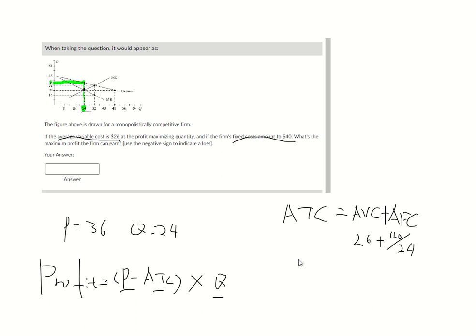So your average total cost in this question is 40 divided by 24 plus 26. Let me calculate that using my calculator. 40 divided by 24 plus 26, and that's going to be 27.6667. I'm going to carry four decimals.